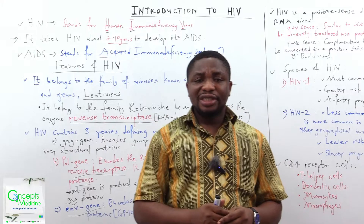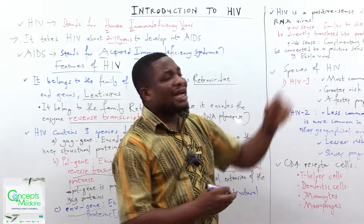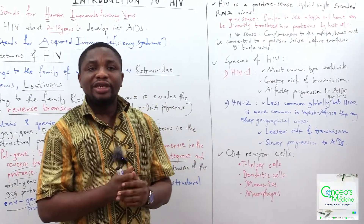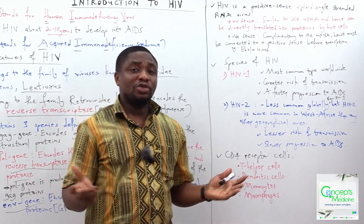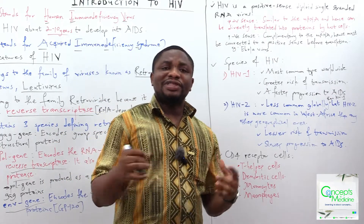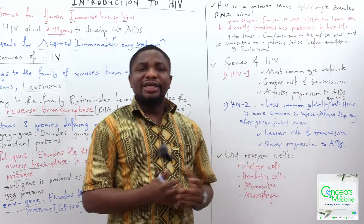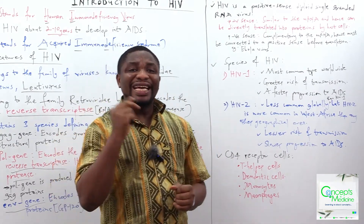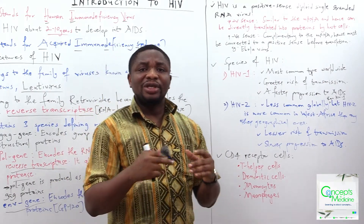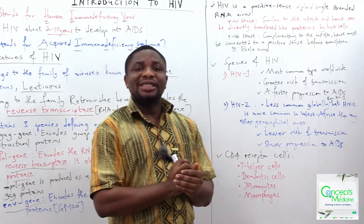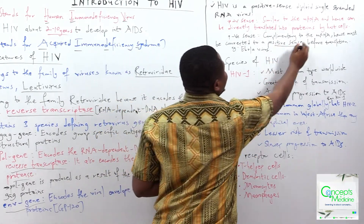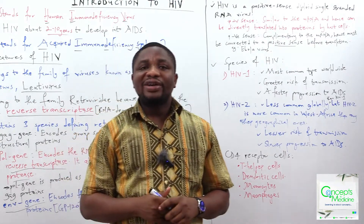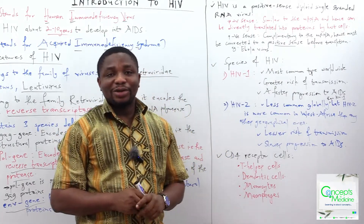You should know that HIV is a positive-sense diploid single-stranded RNA virus. When we say positive sense, it means that the viral structure contains the messenger RNA or is similar to the messenger RNA, and hence it can be translated directly into proteins. When we say negative sense, it means the structure of the virus is complementary to the messenger RNA, and hence must be converted into the positive sense first before translation. A typical example of a negative-sense virus is the Ebola virus.